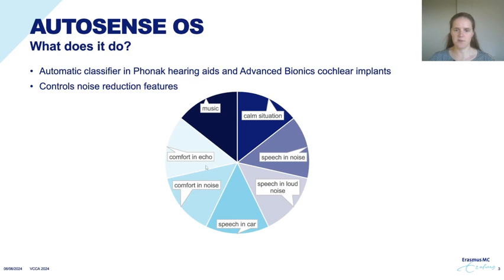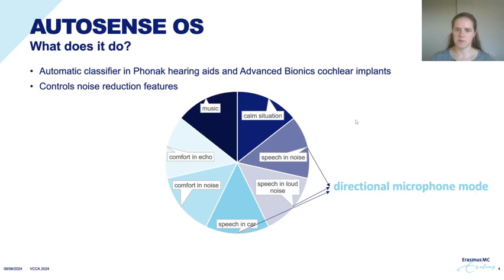It detects the acoustic features of the environment and based on that it classifies the environment into one of the categories listed here. These different categories control the noise reduction features of the hearing devices, and in the case of hearing aids they can also make slight adjustments to the gain settings. One of the noise reduction features controlled by AutoSense is the directional microphone mode, which is switched on when speech is detected in these three categories.